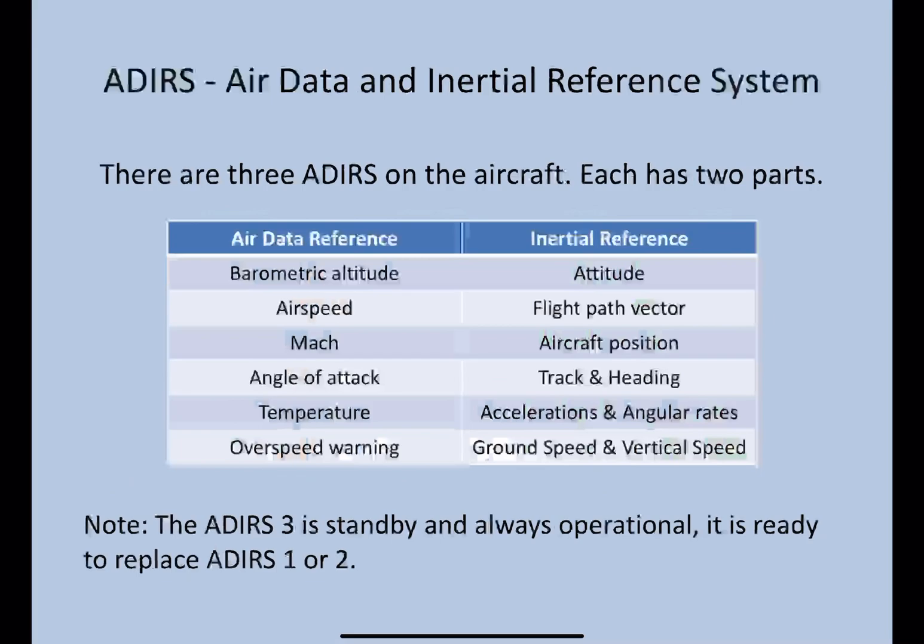Each has two parts: the air data reference part and the inertial reference part. The air data part gives us pneumatic data — barometric altitude, airspeed, Mach, angle of attack, temperature, and overspeed warning.